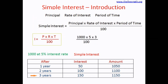Applying the formula: P × R × T ÷ 100 = 1000 × 5 × 3 ÷ 100. Cancel out the zeros to get 10 × 5 × 3. Five threes are 15, and 15 tens are 150. The answer is 150, which matches the interest we calculated before. The formula works — this is the formula we will use to solve simple interest problems.